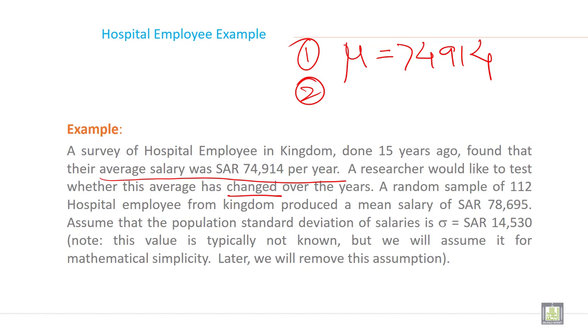A random sample of 112. So random sample third information N is given 112. He has taken 112 as a sample.